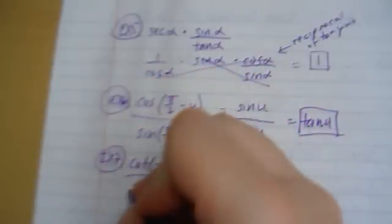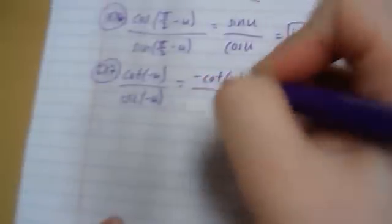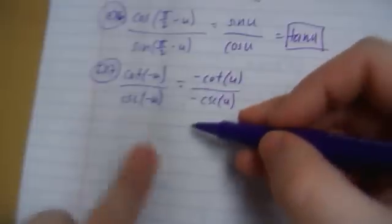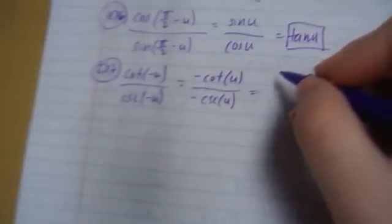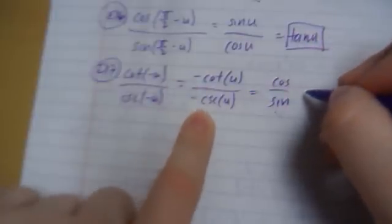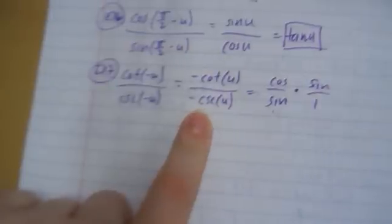Last example: I have cotangent of negative u over cosecant of negative u. This uses the even and odd identities. Cotangent of negative u equals negative cotangent u, and cosecant of negative u equals negative cosecant u. We have a negative divided by a negative, so the final answer is positive. Rewriting: cotangent is cosine over sine, and since we're dividing by cosecant (1 over sine), I flip and multiply. The sines cancel and I'm left with cosine u.